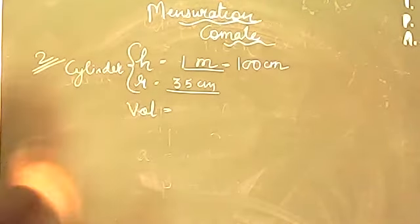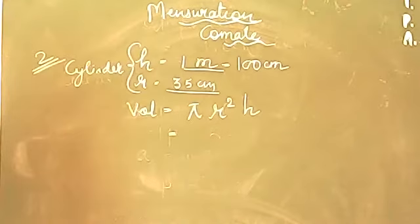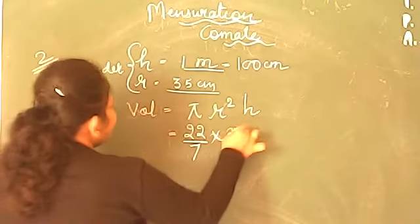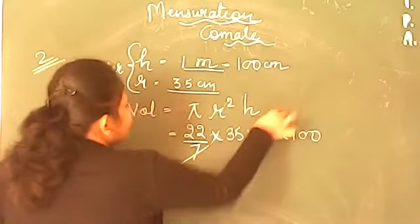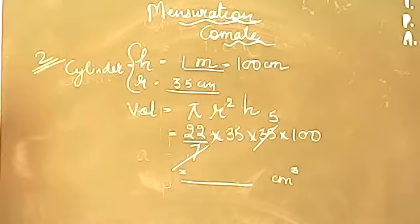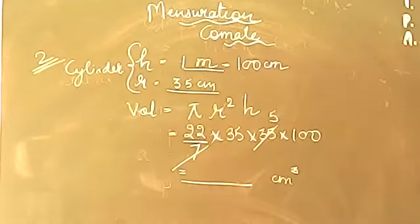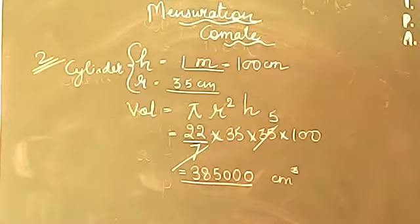The formula for volume of a cylinder is π r² h. Putting in the values: π = 22/7, r = 35 cm, h = 100 cm. So volume = 22/7 × 35 × 35 × 100. Cancel where possible and multiply all the numbers. The answer comes out to 385,000 cubic centimeters. So 385,000 cm³ is the answer for question number 2.